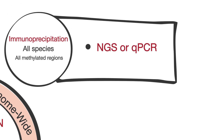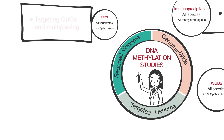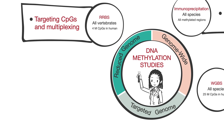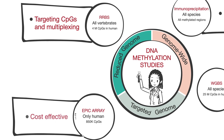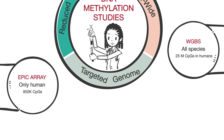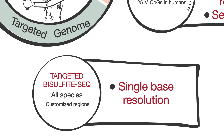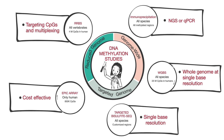For a reduced approach and cost savings, we offer a variety of single-base resolution approaches including RRBS with support for all mammals and Epic Array services for humans. Or you might try a targeted approach where you can specify the number of CpGs you want covered.